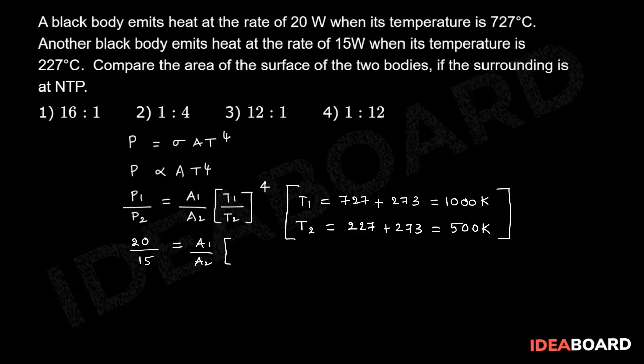Therefore this is 1000 by 500 whole power 4. These two zeros get cancelled. 5 ones, 5 twos.